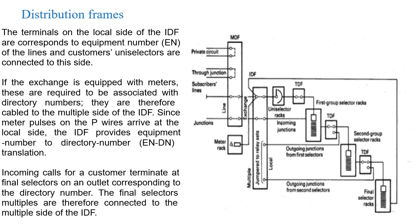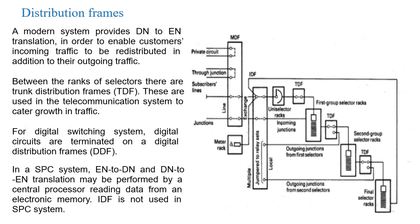The IDF provides equipment number to directory number (DN) translation. Incoming calls for a customer terminate at final selectors on an outlet corresponding to the directory number. The final selectors' multiples are therefore connected to the multiple side of the IDF. A modern system provides DN to EN translation in order to enable customers' incoming traffic to be redistributed, in addition to their outgoing traffic.